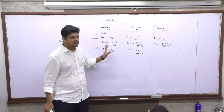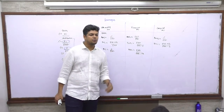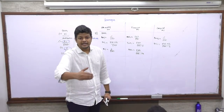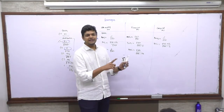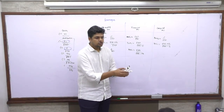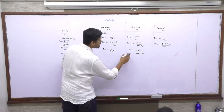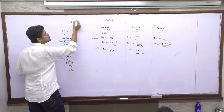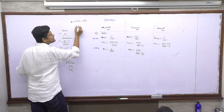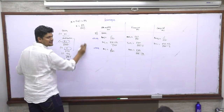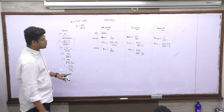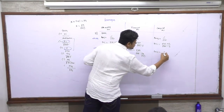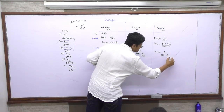Everything is pre-tax — pre-tax, pre-tax — except preference dividend which is post-tax. So I will have to bring preference dividend to pre-tax as well. Since preference dividend is post-tax, if pre-tax preference dividend is x, then x times (1 minus t) gives post-tax preference dividend. Therefore, pre-tax preference dividend equals preference dividend divided by (1 minus t).